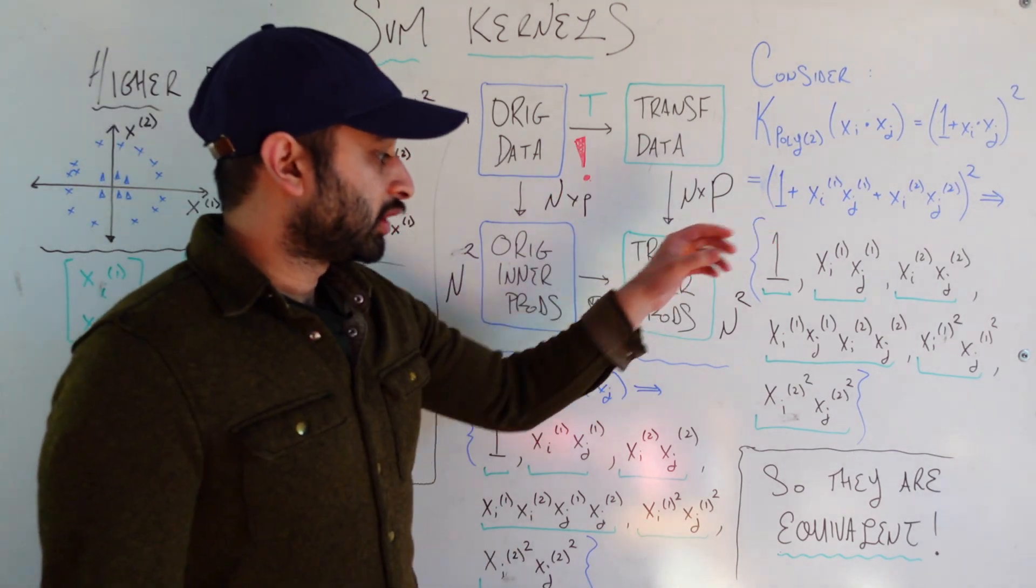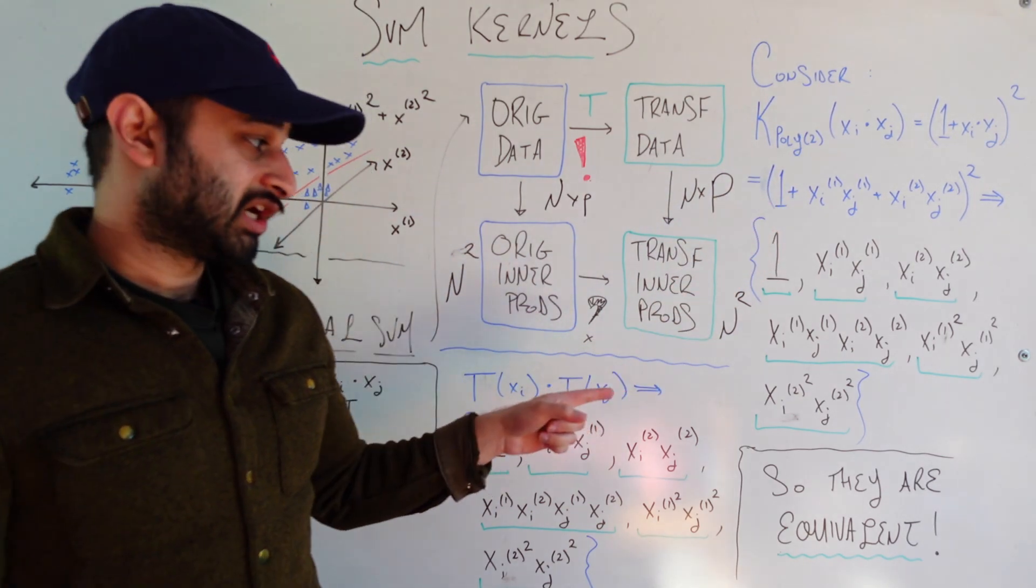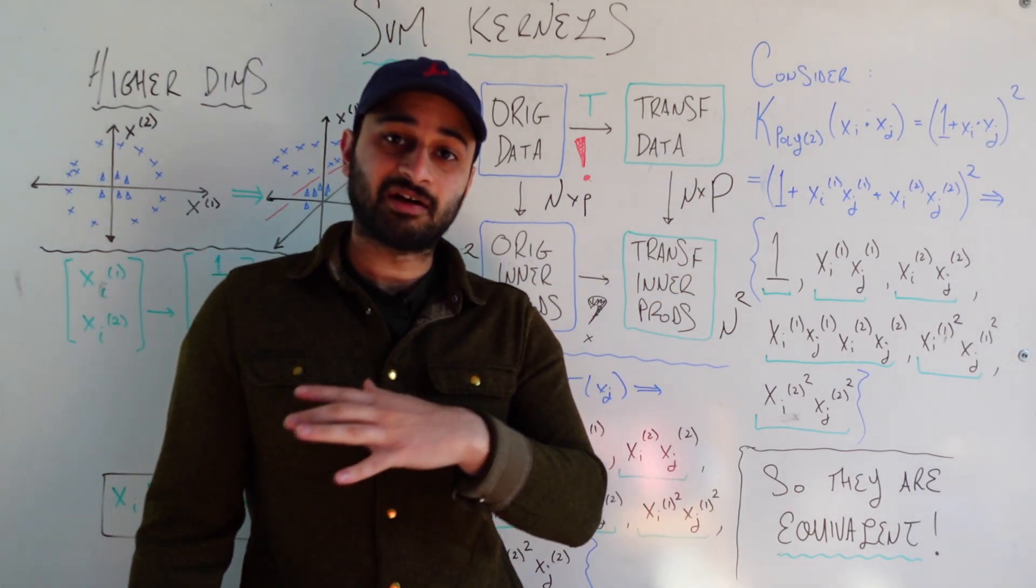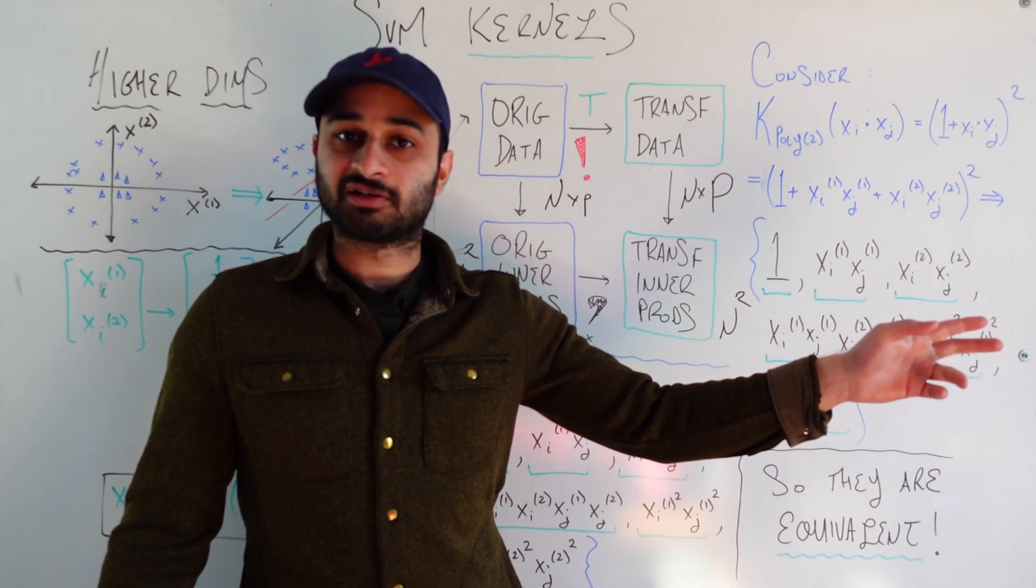Now those are the exact six terms, coincidentally or not coincidentally actually, that we need if we're able to get the transformed inner product. Which means we're able to go about it this way or this way. Now the benefit of going about it this way is that we never actually have to run the transformation T. We never have to send our data to a high dimensional space. But we reap all of the benefits of sending our data to the high dimensional space.